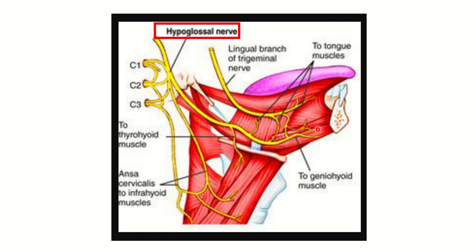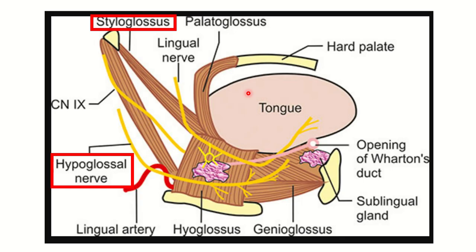In this picture we can see the nerve supply. The hypoglossal nerve passes and goes to the tongue, supplying the different muscles of the tongue, including the styloglossus. In this figure showing the tongue and the extrinsic muscles attached to it, we can see the palatoglossus and the styloglossus, and this styloglossus is supplied by the hypoglossal nerve.